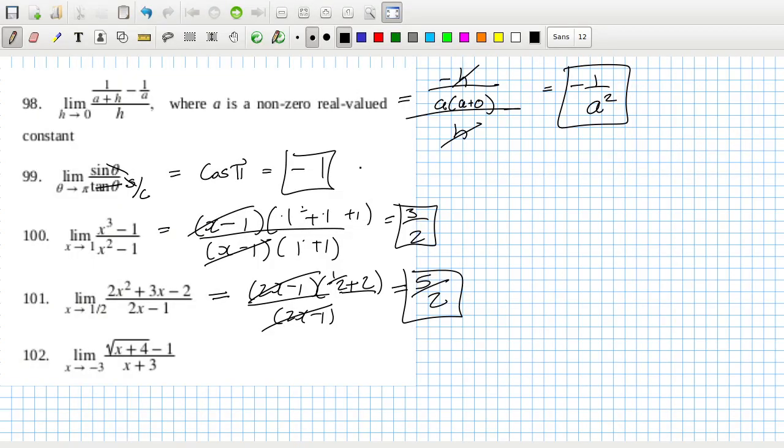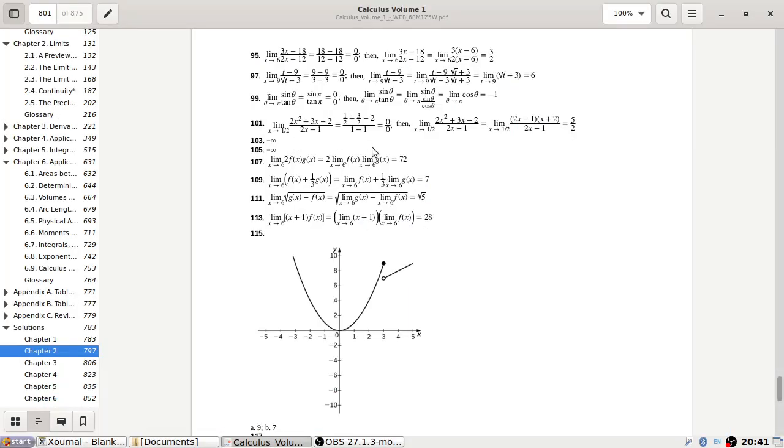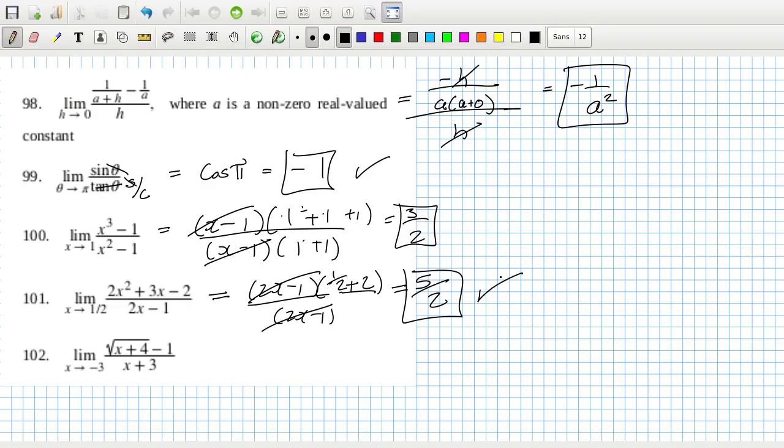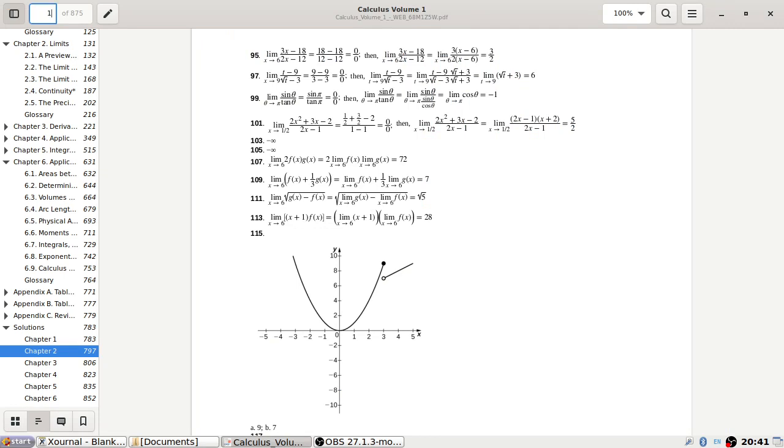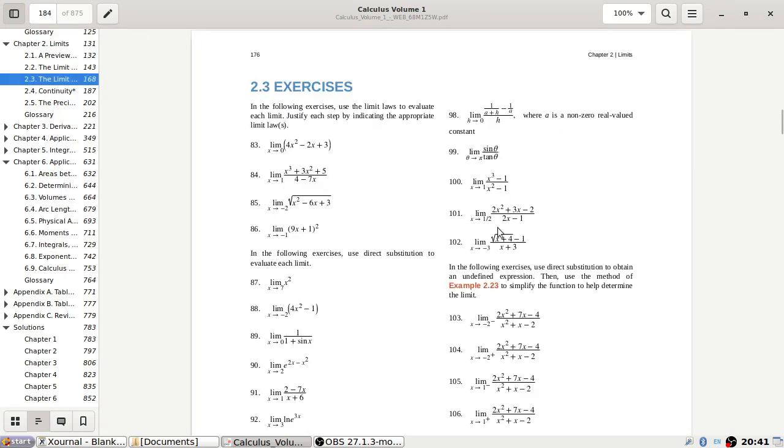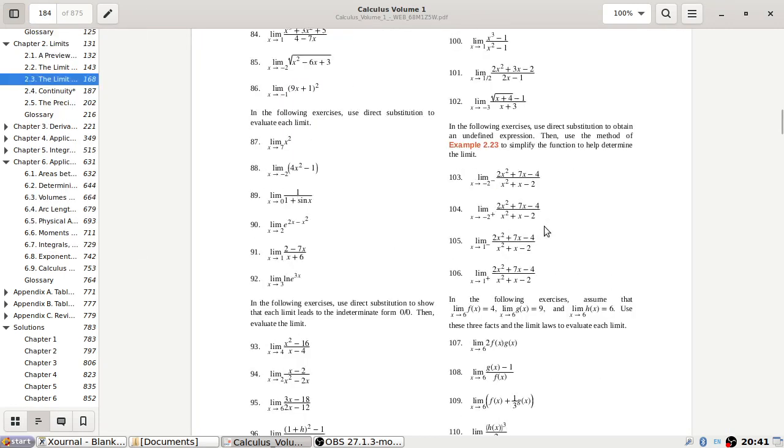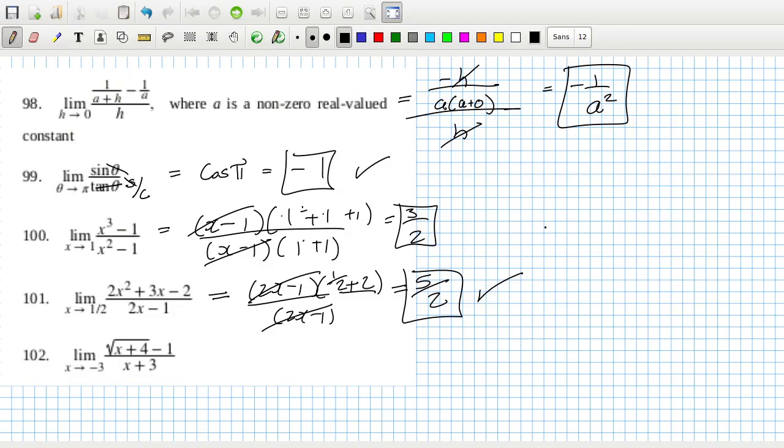99 is minus 1. 101 is 5 over 2, so that checks out. I don't know the answer for 102 though. Okay. I am thinking, do I want to multiply both top and bottom by root a conjugate?